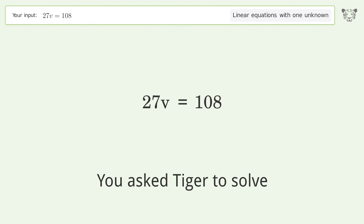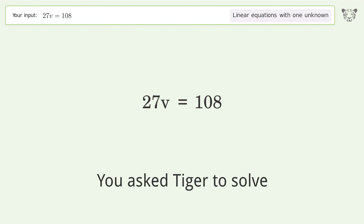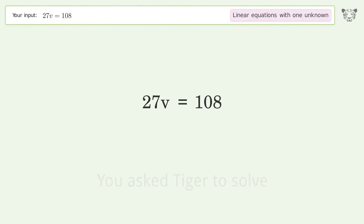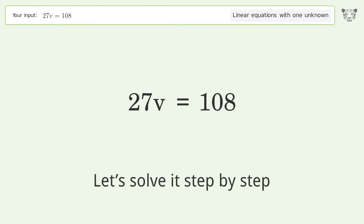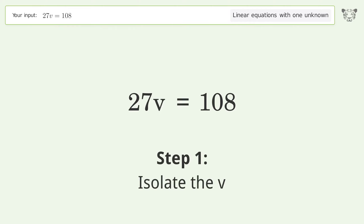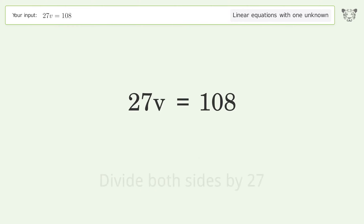Tiger solves a linear equation with one unknown; the final result is v equals 4. Let's solve it step by step: isolate the v by dividing both sides by 27.